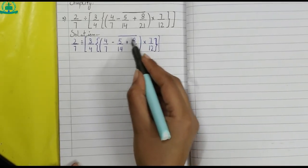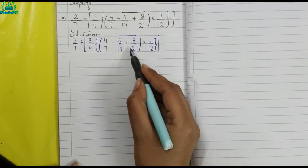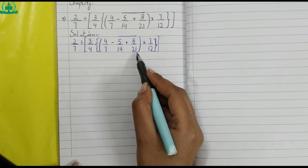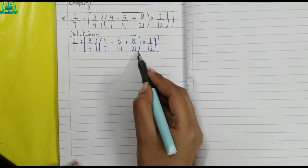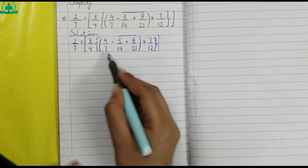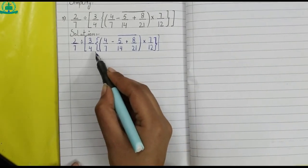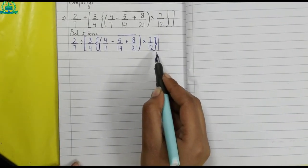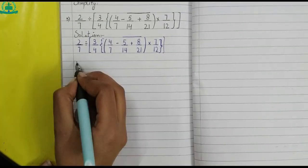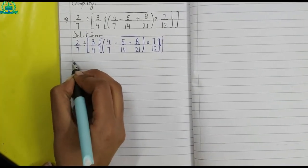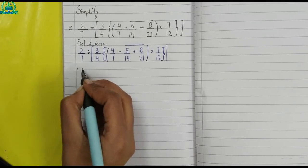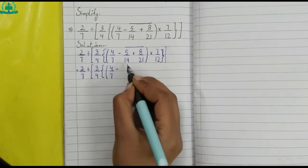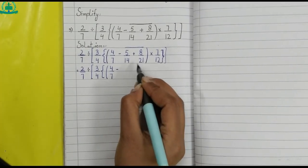While solving such expressions, first the part under the bar is solved, then the brackets are removed one after the other in the sequence of round bracket, curly bracket, and square bracket. Keep the remaining part of the question as it is. In this step we take LCM of these two fractions.